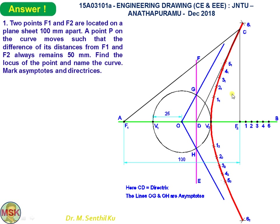Joining all points gives you the locus or the curve. This curve is nothing but the hyperbola. The first part is over. The next part is to mark the asymptotes and directrices. Let us first see about the directrix.